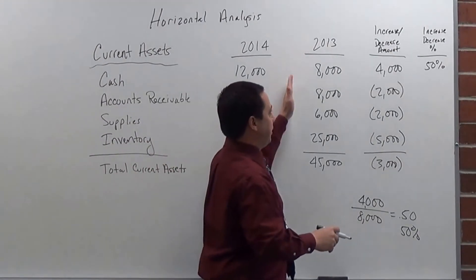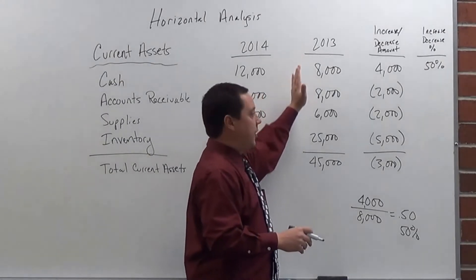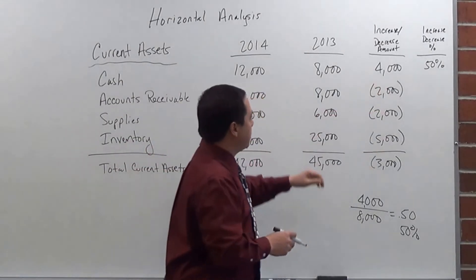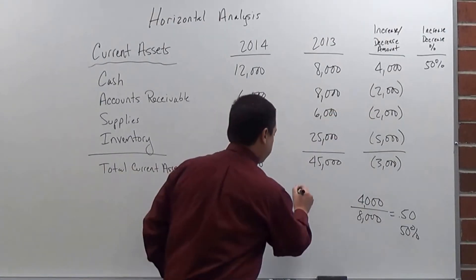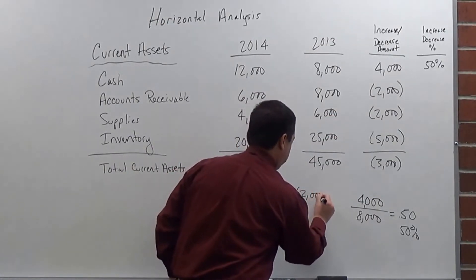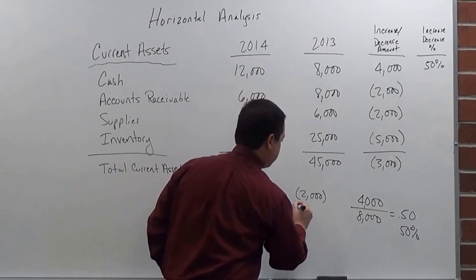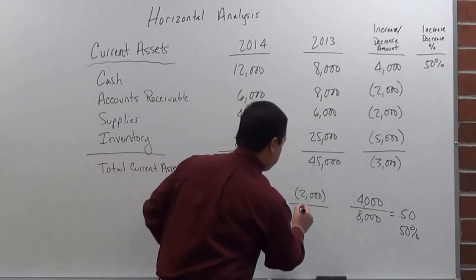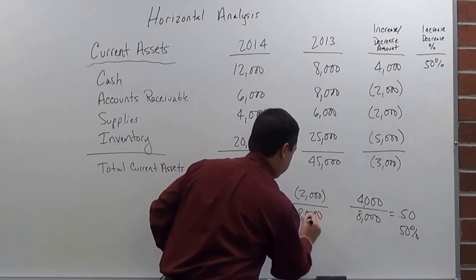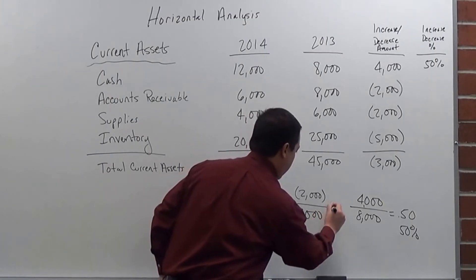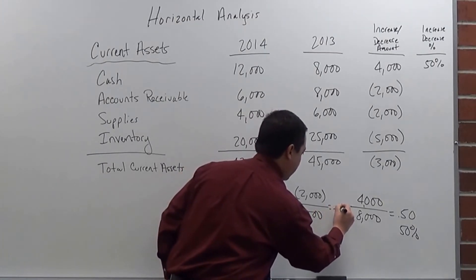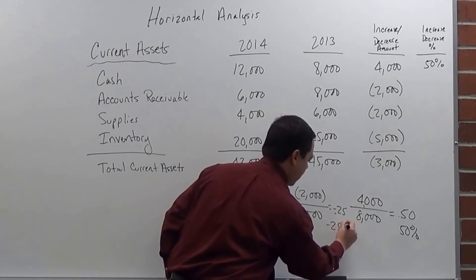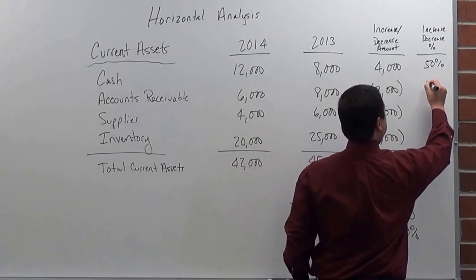So remember that you use the base year, so the year that you are starting with, for the increase or decrease. So if I do the next one here, I have $2,000, and remember this is a negative decrease. So I have $2,000, I have $8,000 as my base, so therefore I will have a negative .25, which is negative 25%, and so that's what I'll have here.